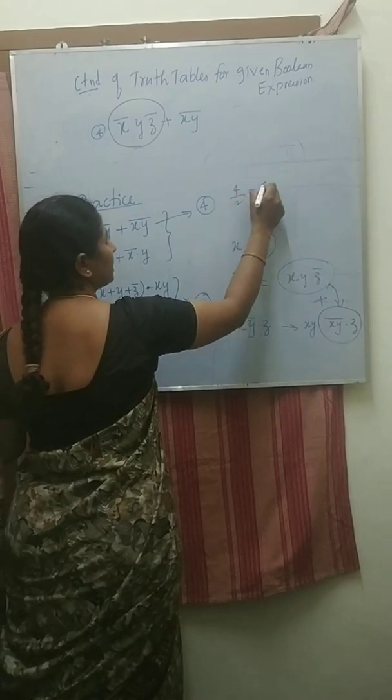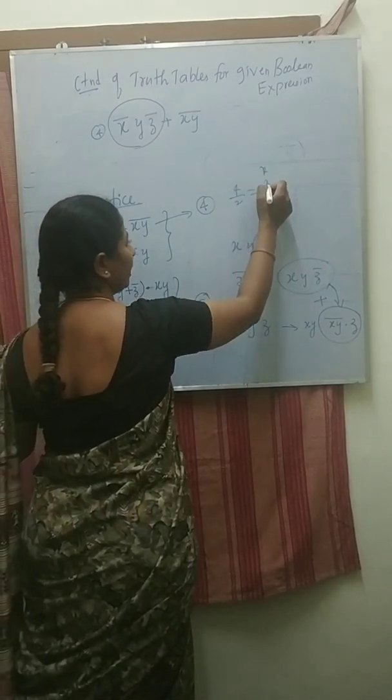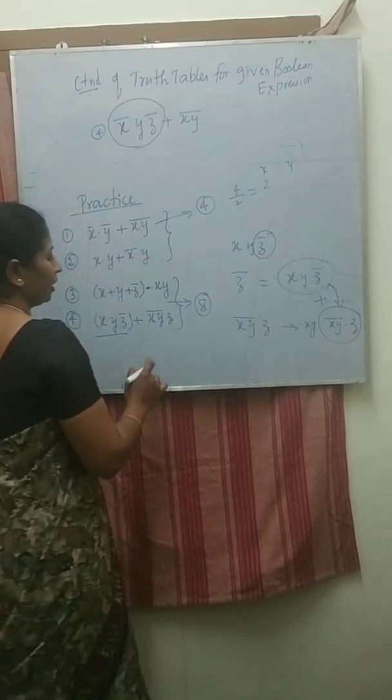Four by two means half two zeros, two ones for the X variable. Zero one, zero one for the Y variable.